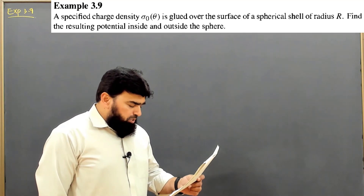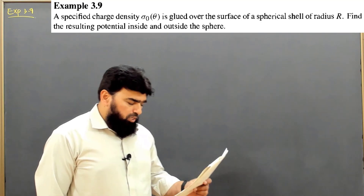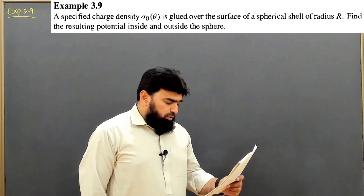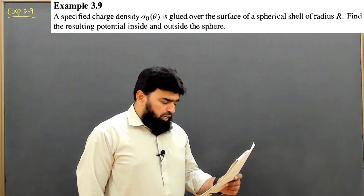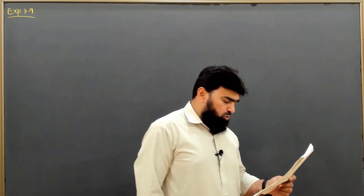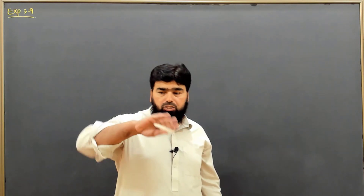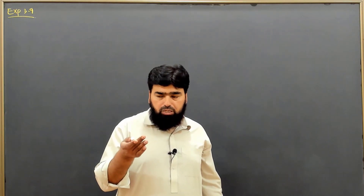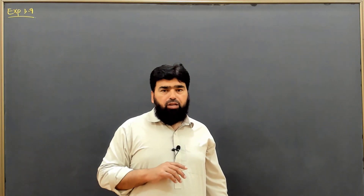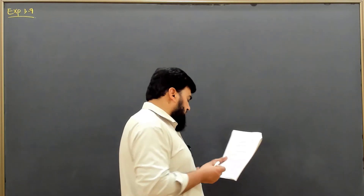A specified charge density sigma-naught of theta is glued over the surface of a spherical shell of radius R. Find the resulting potential inside and outside the sphere. So we will have to find the potential inside and outside of the sphere when on the surface of the sphere some surface charge density has been glued, and we will have to find the potential inside and outside.